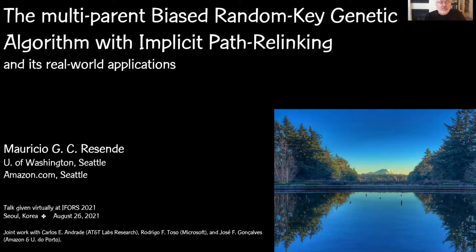Hi, my name is Mauricio Rezengi and today I'm going to talk about the multi-parent bias random key genetic algorithm with implicit path-through linking and its real-world applications. This is joint work with Carlos Andrade of AT&T Labs Research, Rodrigo Tozo of Microsoft, and José Gonçalves of Amazon and University of Porto.